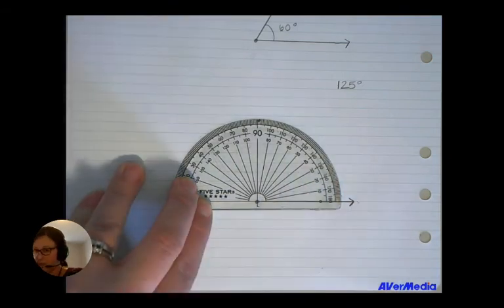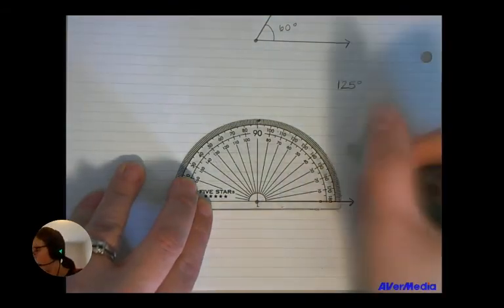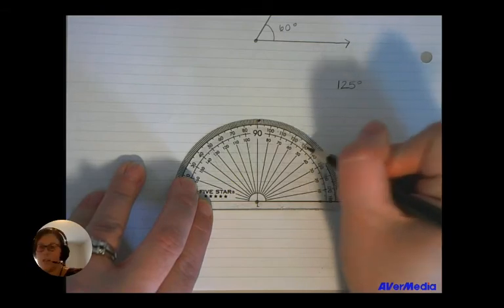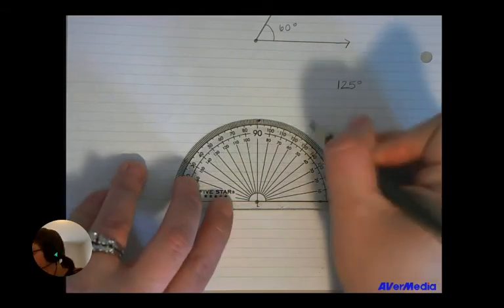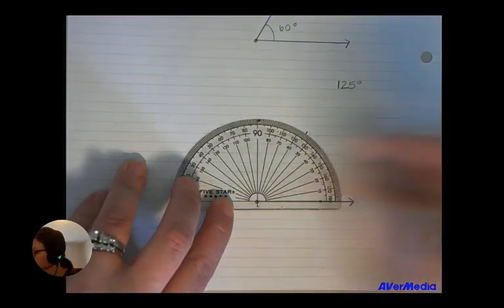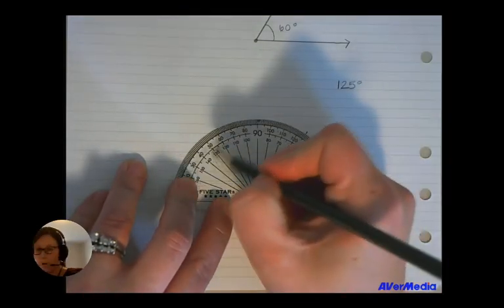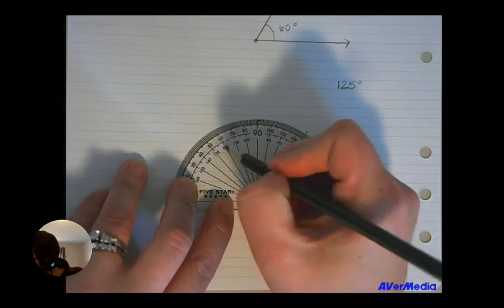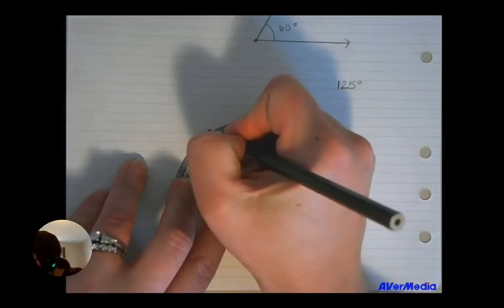And we're going to use the same thought process we used with the 60 degree angle. So I can see here's 120, here's 130. 125 is right in the middle. So I'll draw a dot right there. And here's the other. 120, 130 is right in the middle. So I'm going to draw my other spot there.